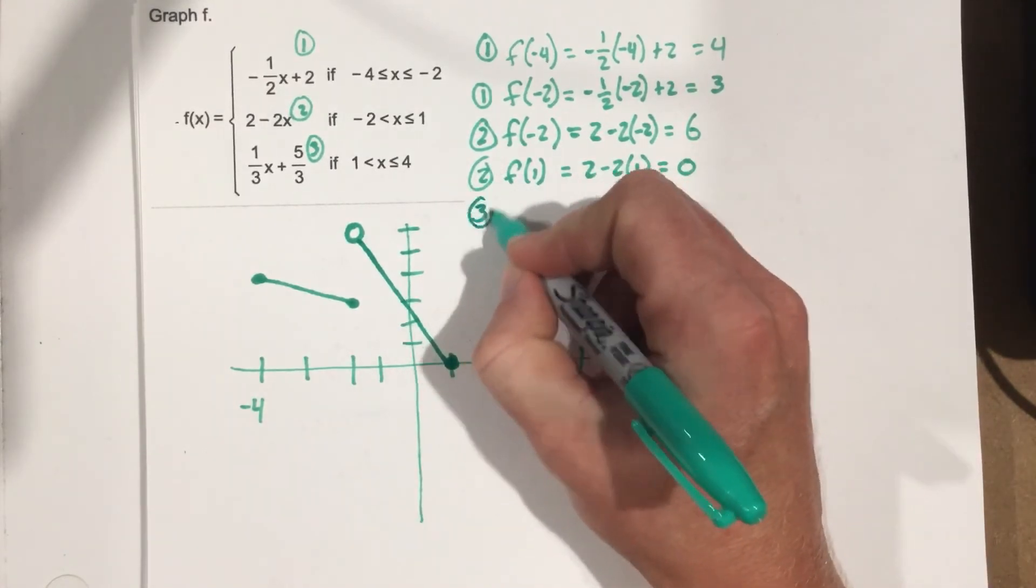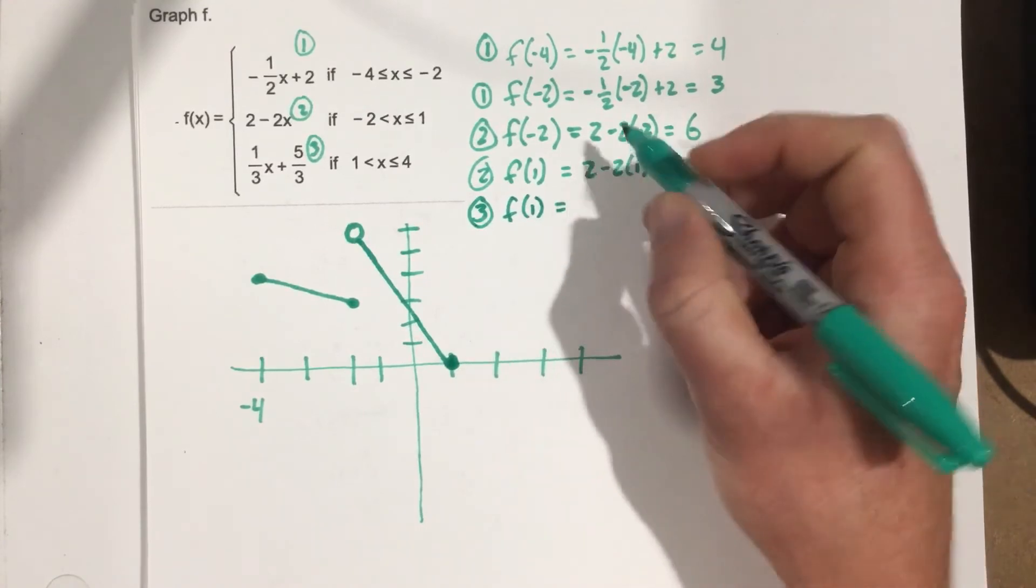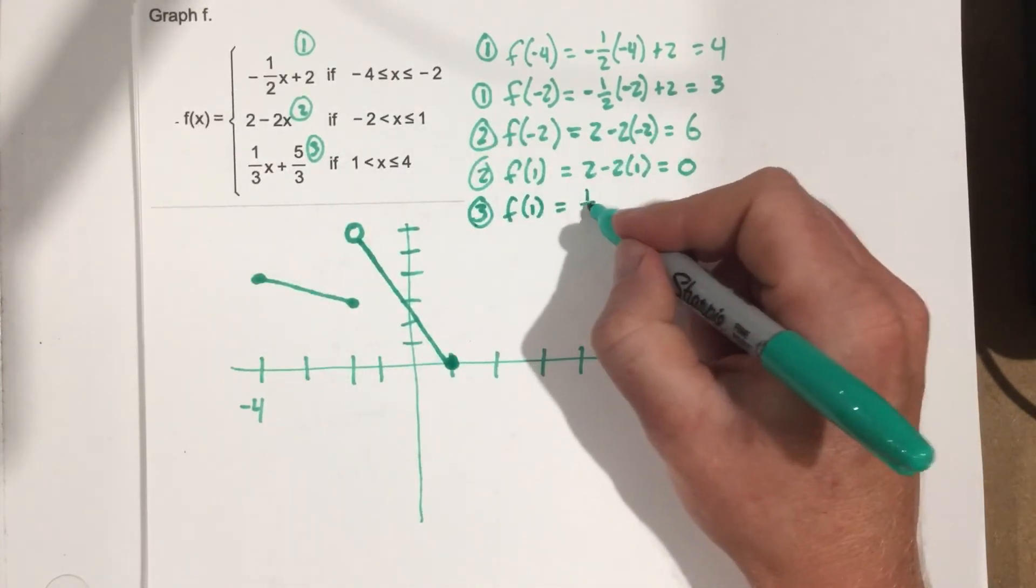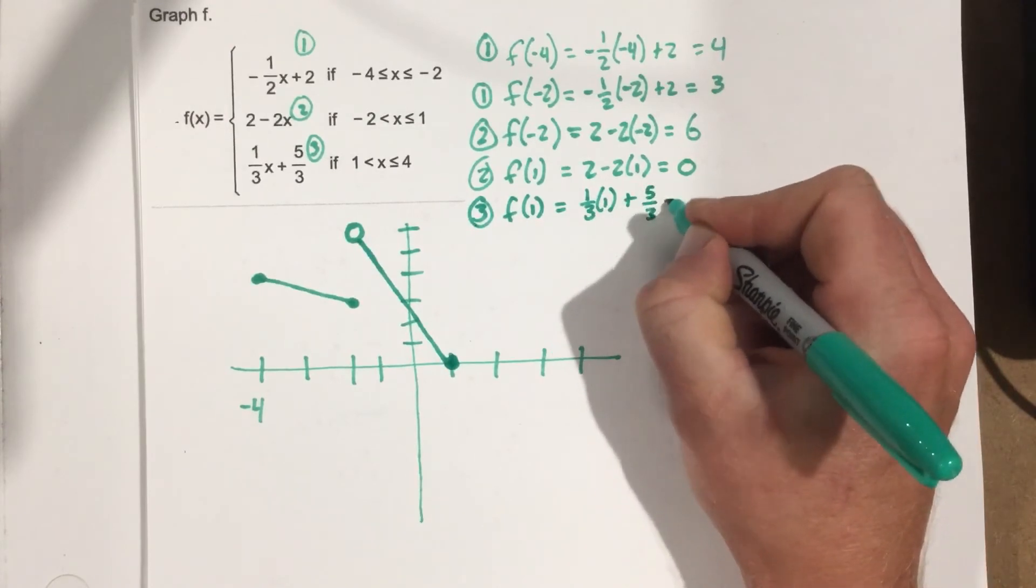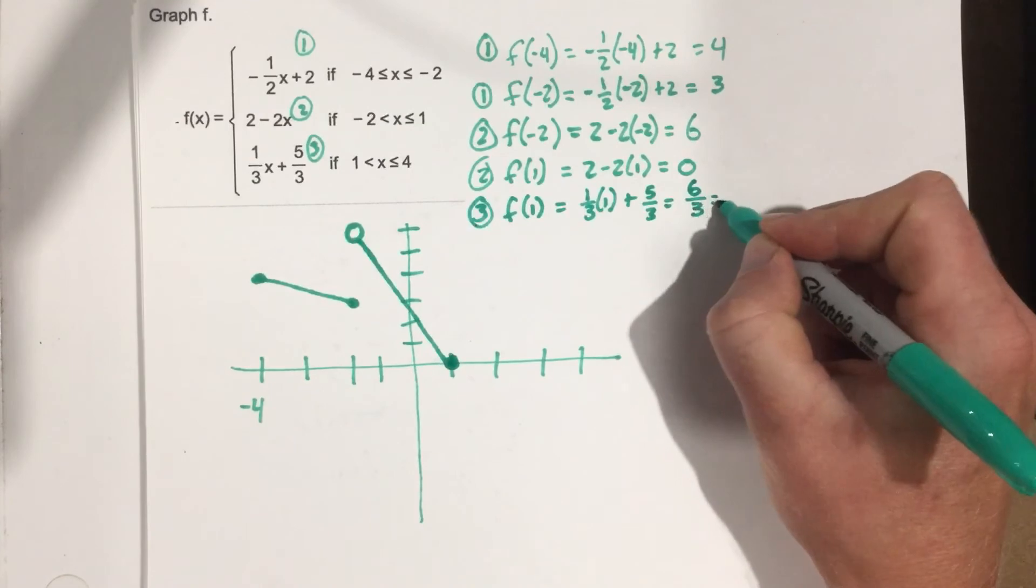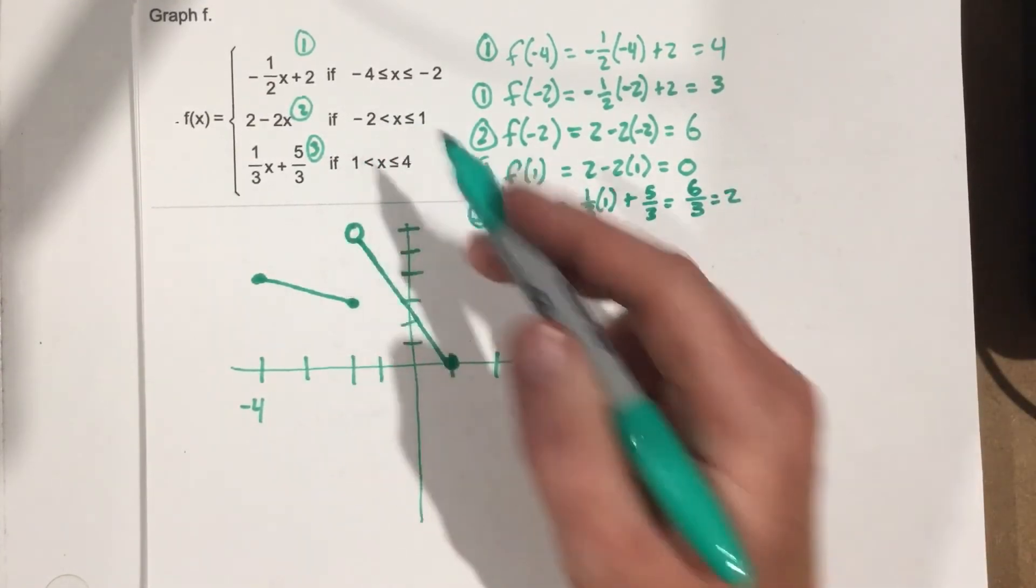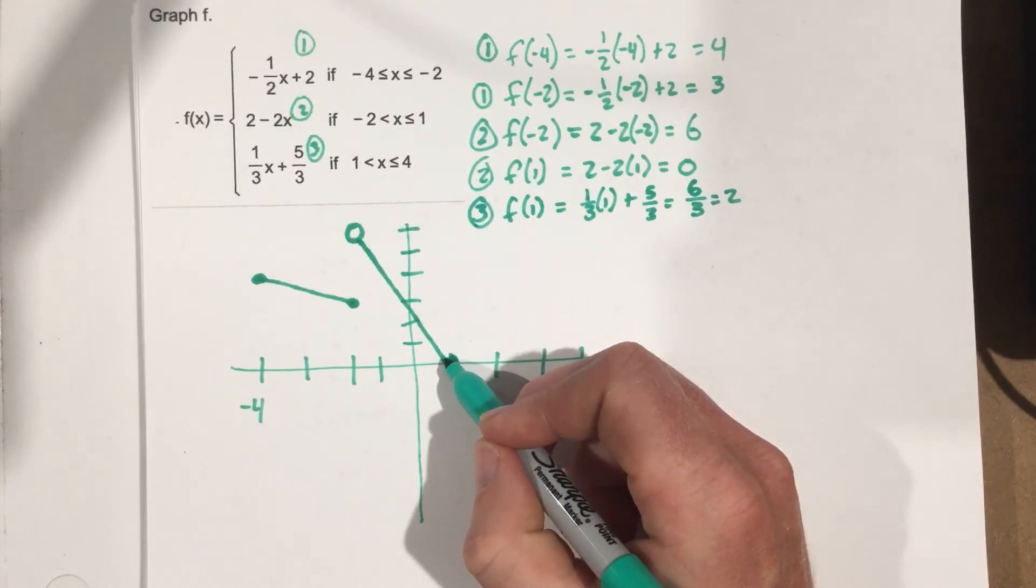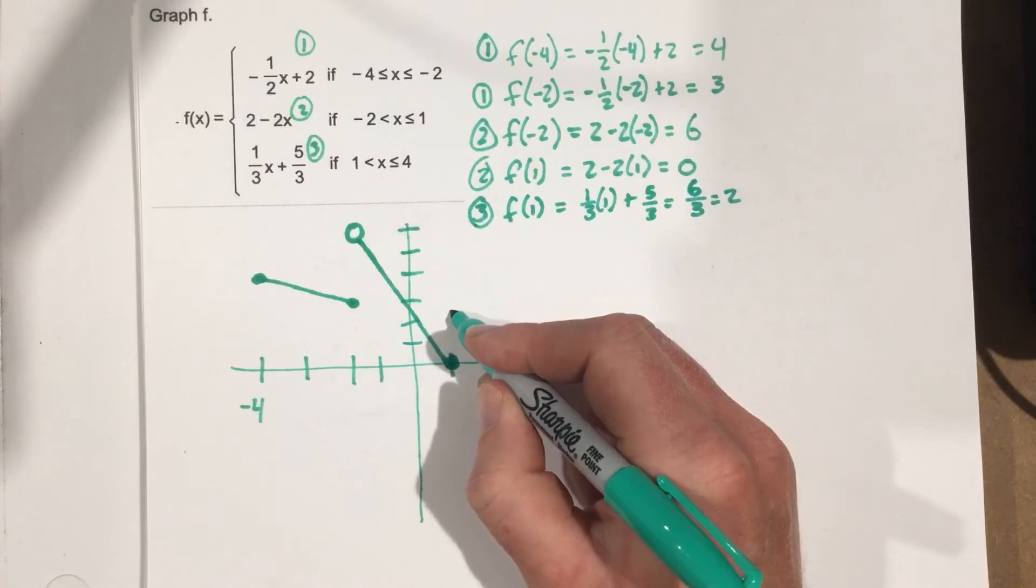Finally, we're going to do this for the third function. We're going to plug in 1. We plug in f of 1. We get 1 third times 1 plus 5 thirds. That gives you 6 thirds, which is 2. So now we're at 1, 2. And remember, it's not equal to here. So 1, 2 is the coordinate. All right, plugged in 1, got 2. 1, 2, open dot.